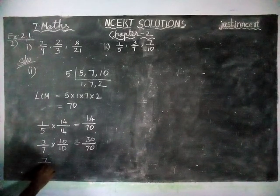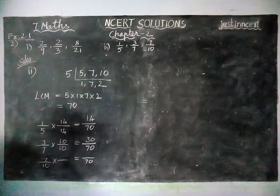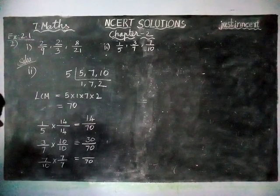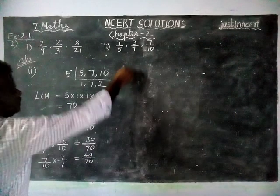Next, 7 by 10 into, we have to get denominator 70. We are going to multiply and divide by 7 by 7. 7 times 7 is 49, 10 into 7 equals 70.